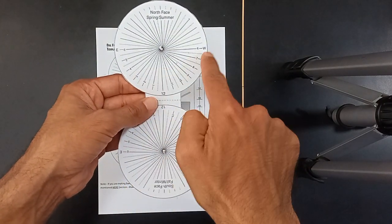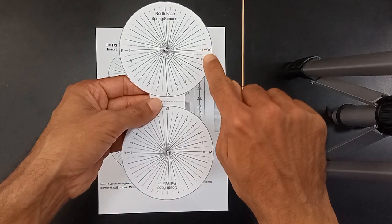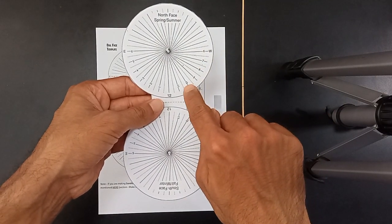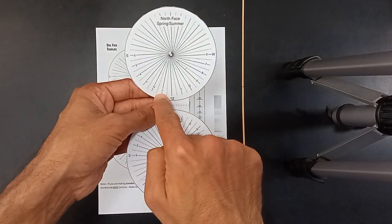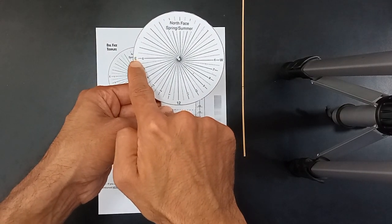This is 6 a.m., 7 a.m., 8 a.m., 9 a.m., 10 a.m., 11 a.m., 12 p.m., then 1, 2, 3 p.m., 4 p.m., 5 p.m., 6 p.m.